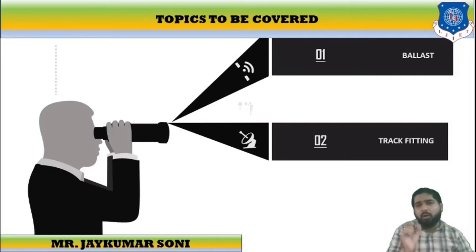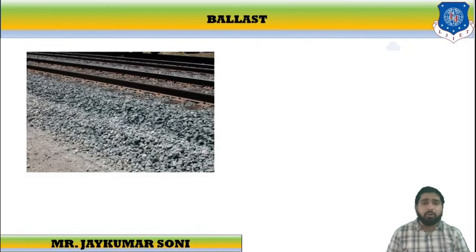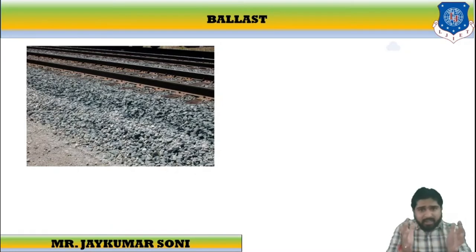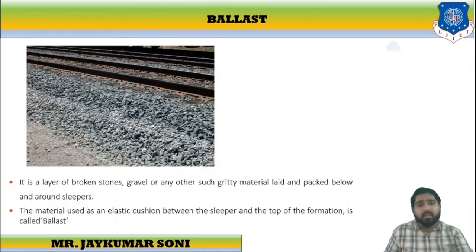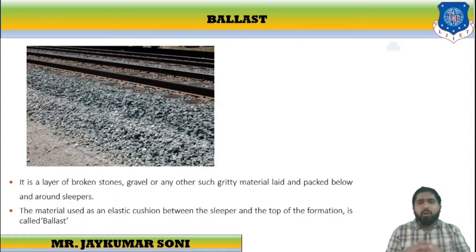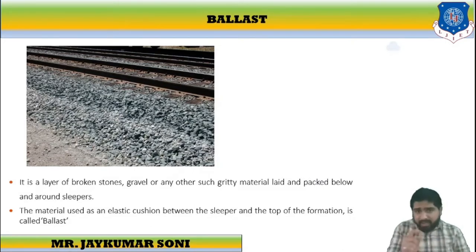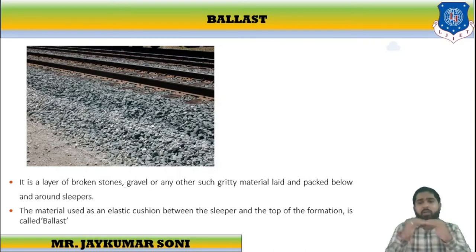You are already briefly aware of what ballast is. Ballast is a layer of broken stones, gravel, sand, or any gritty material. It is laid and compacted below and around the sleeper. You can observe in the photo that it is placed below and around the sleeper. This material is used as an elastic cushion between the sleeper and the top of the formation.